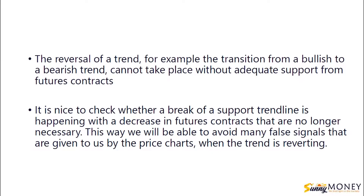Furthermore, it is clear that the reversal of a trend — for example the transition from a bullish to a bearish trend — cannot take place without adequate support from futures contracts, so we can avoid incurring false signals. It is useful to check whether a break of a support trendline is happening with a decrease in futures contracts that are no longer necessary. This way we will be able to avoid many false signals given to us by the price charts when the trend is reverting.